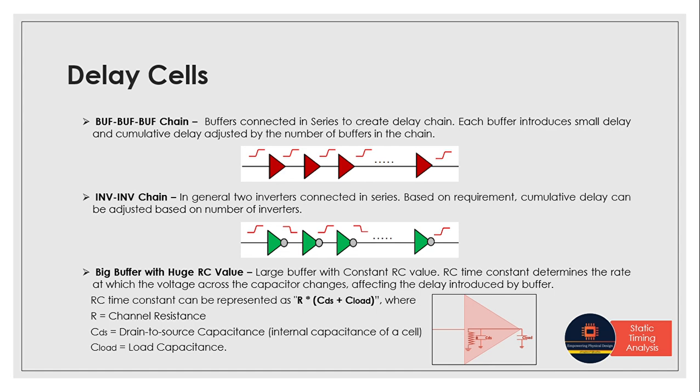Next is inverter-inverter chain. So this approach involves using inverters in a chain. In this case the delay is introduced by the propagation delay of the inverters. So using two inverters in series can create a delay element and the cumulative delay can be adjusted by the number of inverters in the chain.